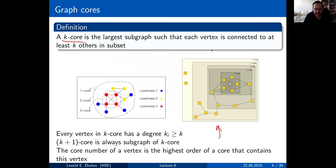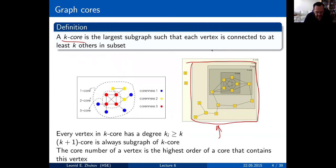Looking at this picture, the one-core of the graph would be right here. Every node in that subgraph is connected to at least one other vertex. Another way to say this: the one-core is actually a connected component of the graph.